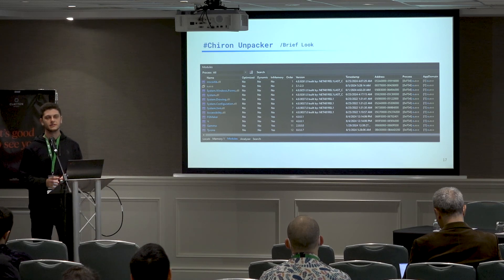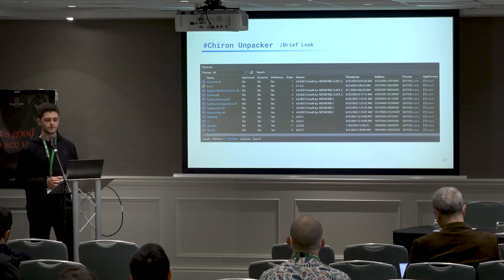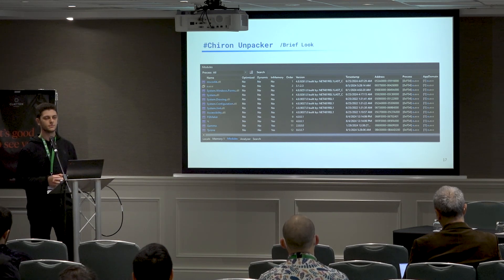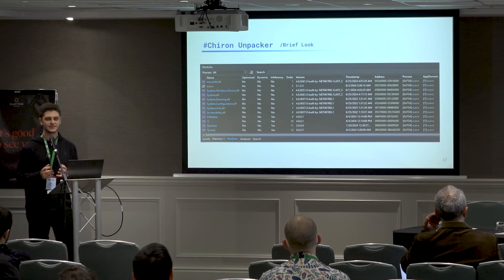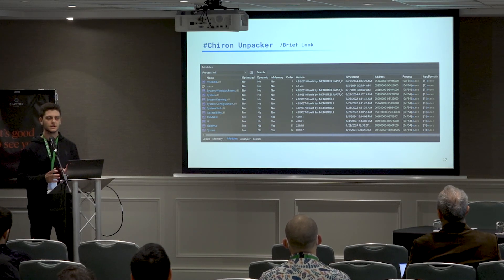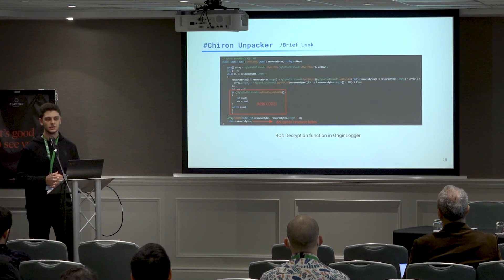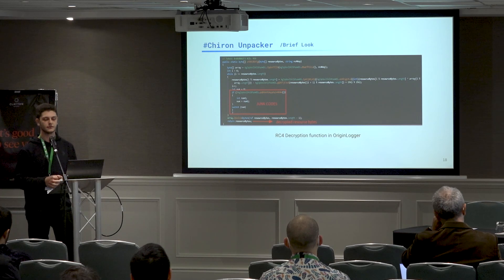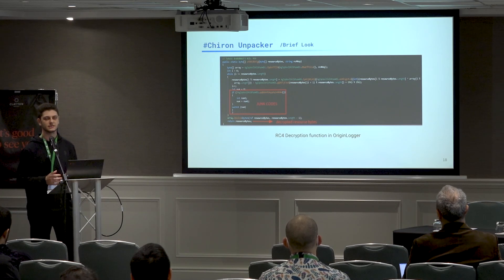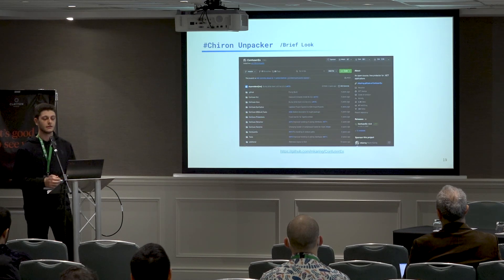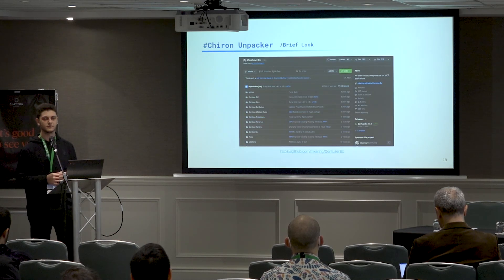When we execute the sample in debug mode with dnSpy running in an isolated environment, we can see that many modules are loaded at runtime. The last module loaded is Tyron, which unpacks the protected application. When you pack an application with Cassandra, all resources are renamed except Tyron. The purposes of the Tyron module are to decrypt the resource in it with a special RC4 key, save it to the AppData local path, and persist its execution by starting a scheduled task. In the Tyron module in Cassandra, we also see some ConfuserX protections such as string encryption.